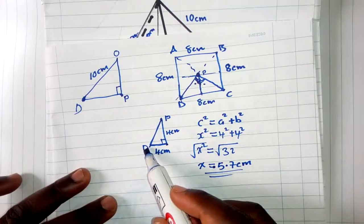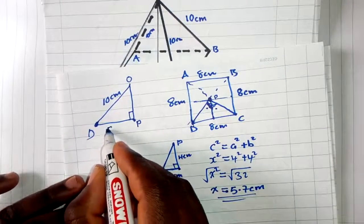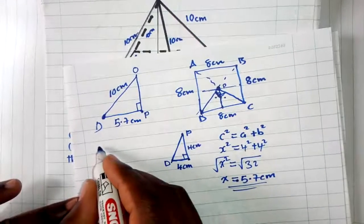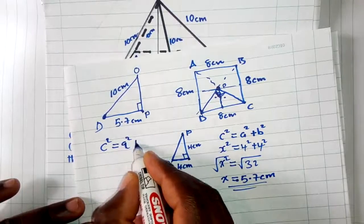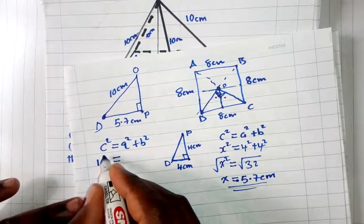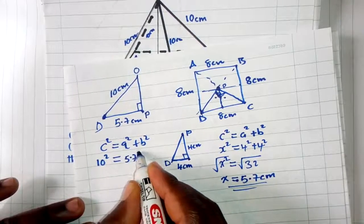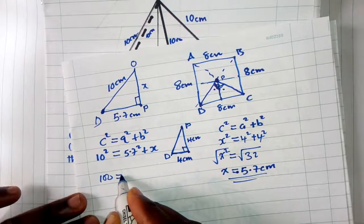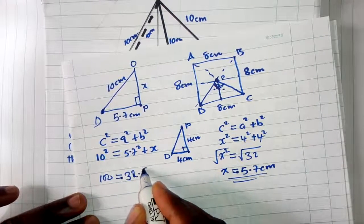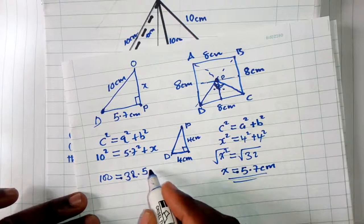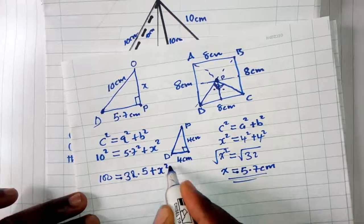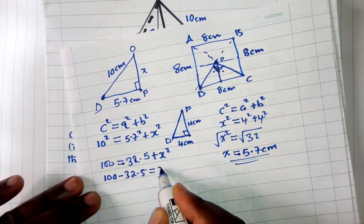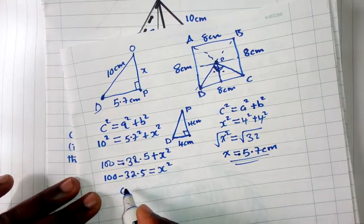We have found DP = 5.7 centimeters. To find the height, we use Pythagoras' theorem again: c² = a² + b². Our hypotenuse is 10, so 10² = 100. We have 5.7² = 32.5, so: 100 = 32.5 + h², which we can now solve.